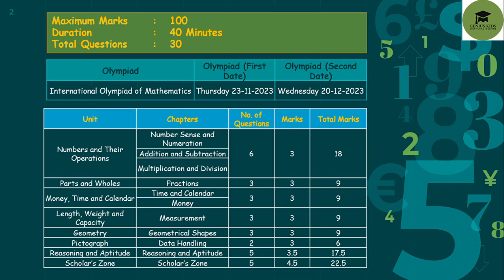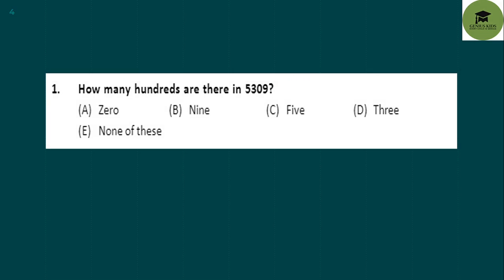In your exam, you get 30 questions and you have 40 minutes to answer, with a total of 100 marks. The Olympiad dates for Silver Zone are 21st November and 28th December. These are the syllabus details with marks and questions distribution, but in this mock test I will give you random questions. So let's start.